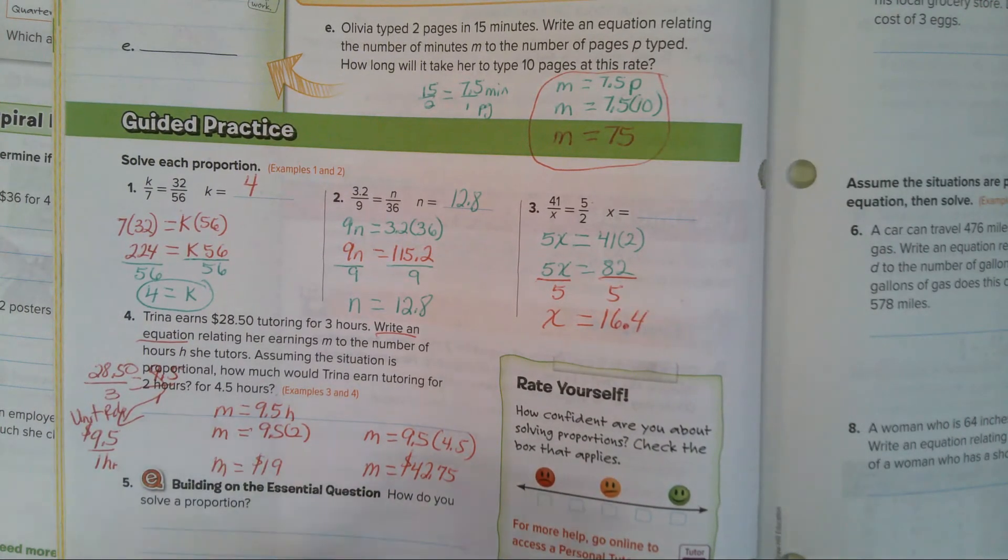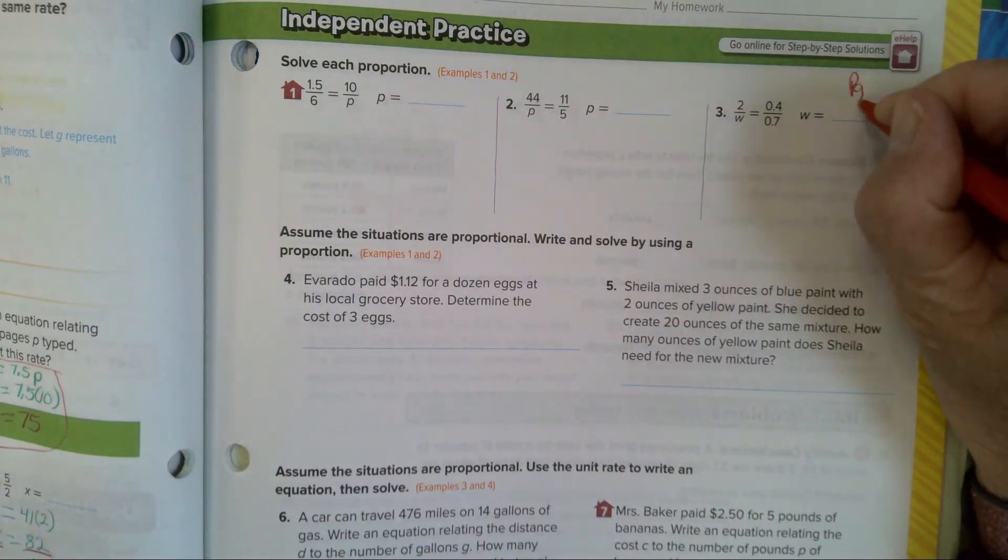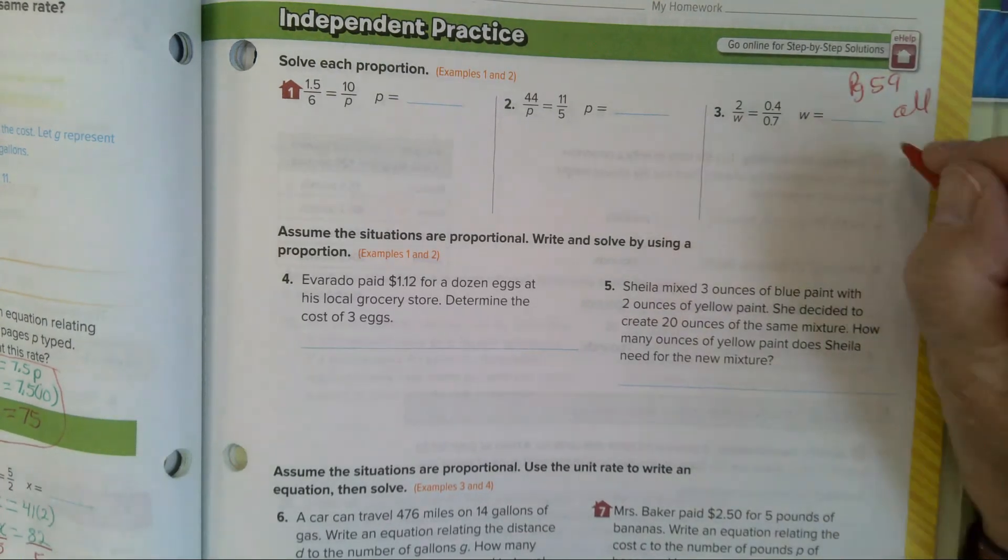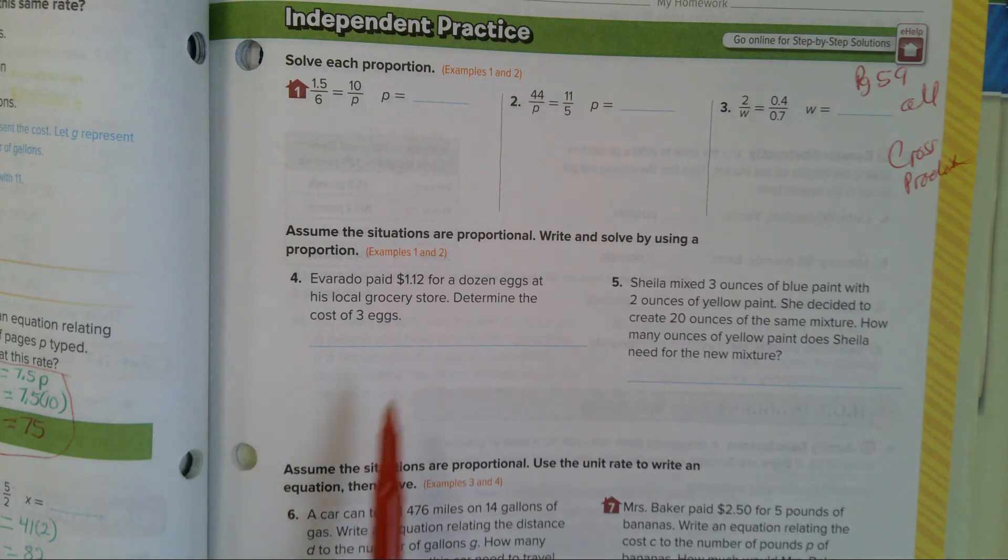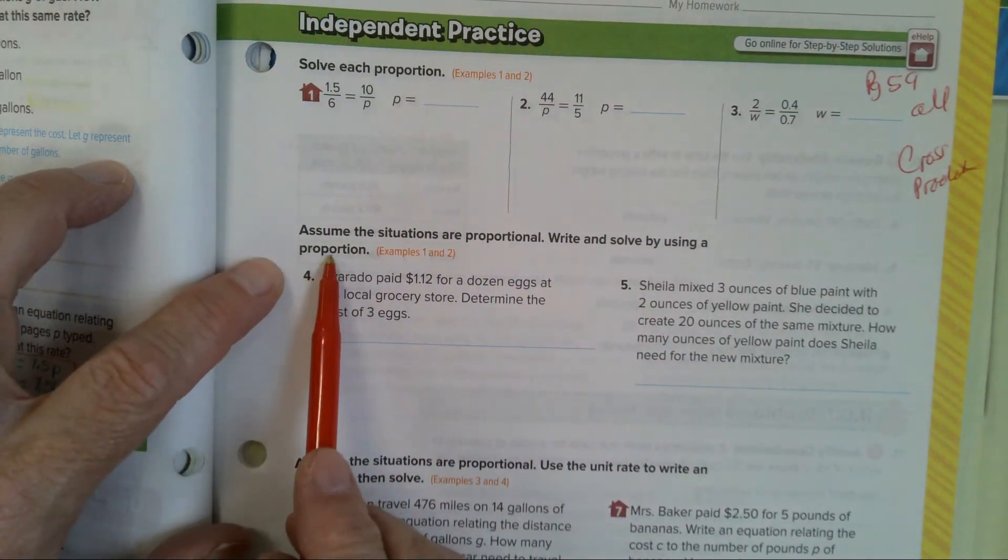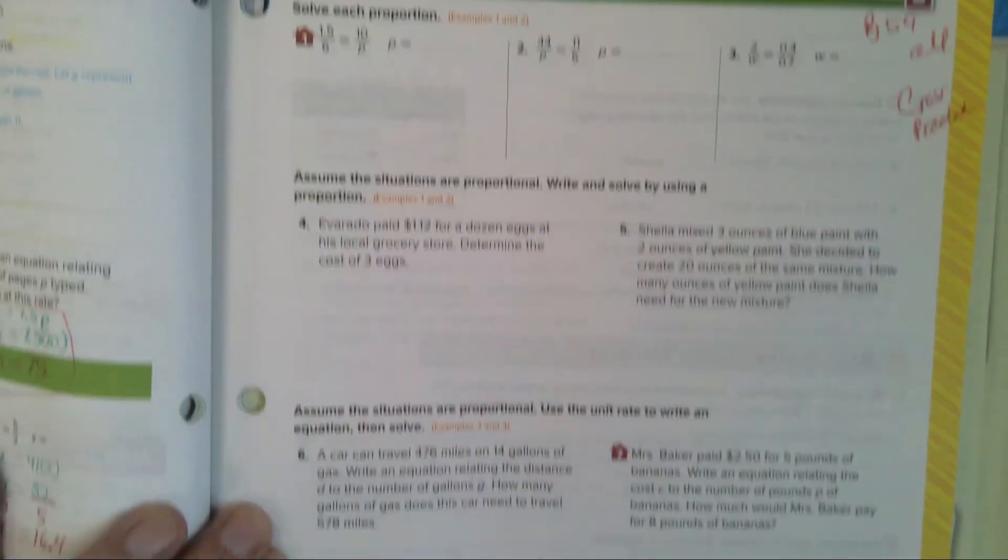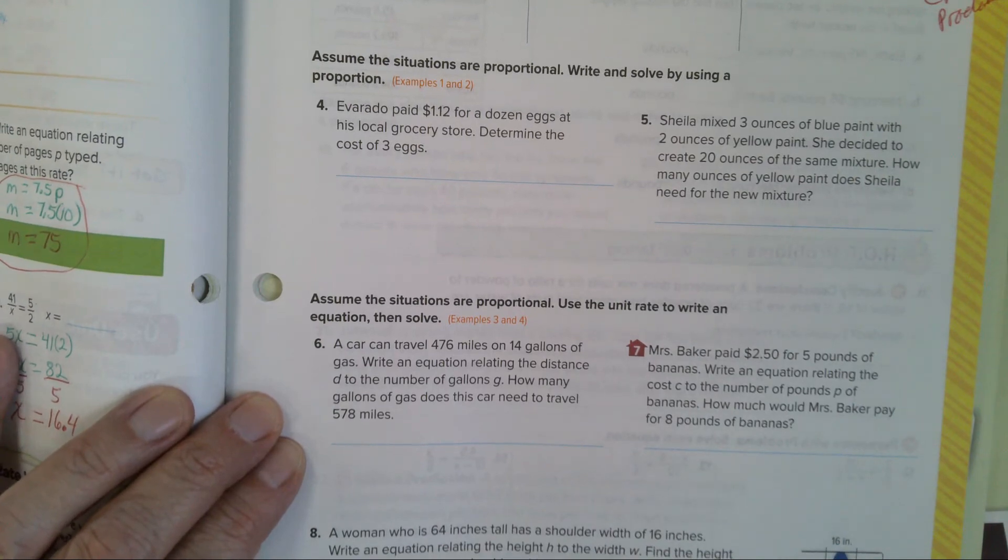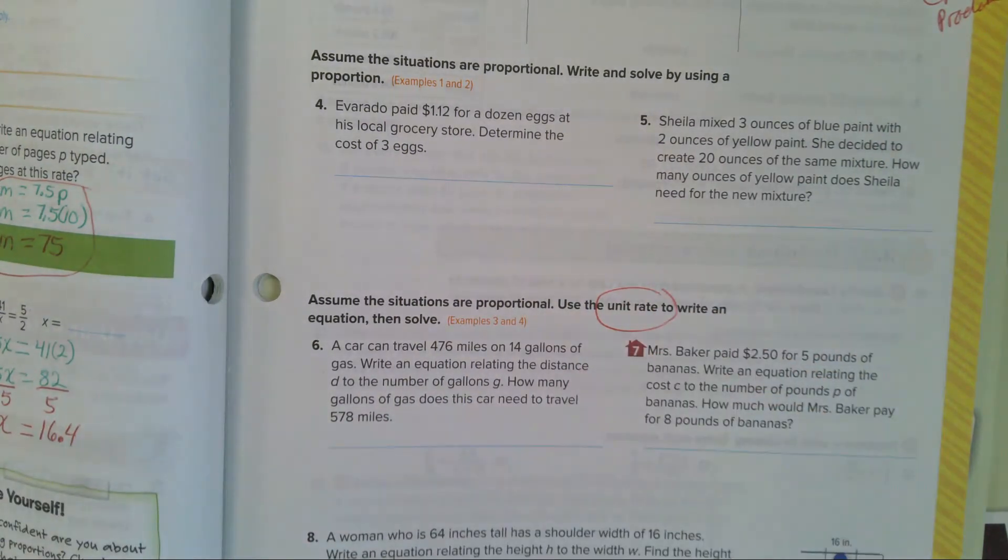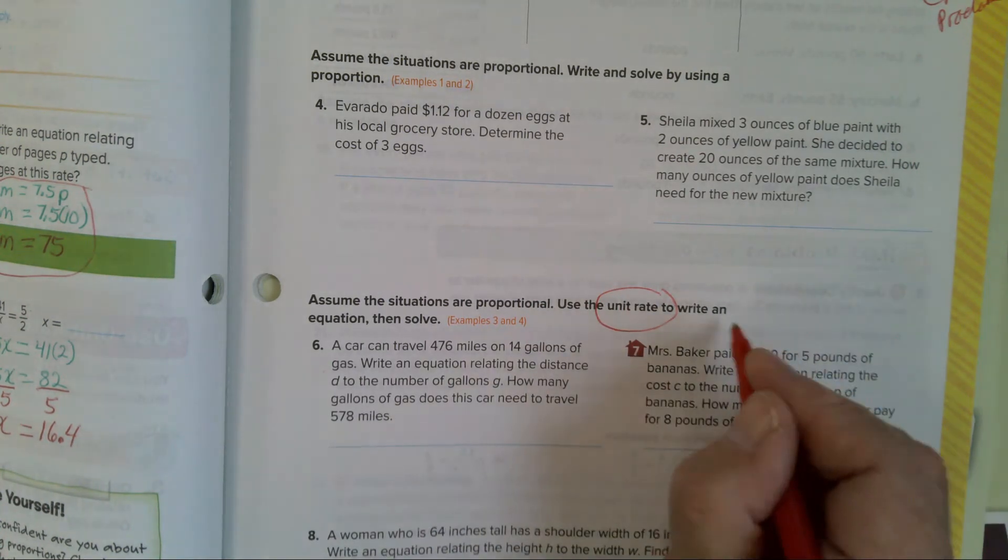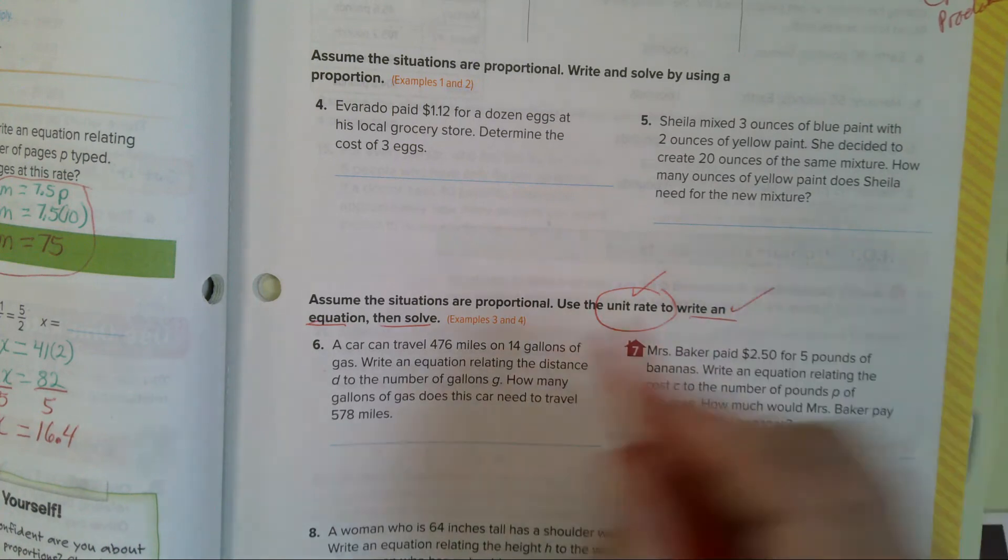So what do I want you to practice? Kids, I want you to show cross products on all of these problems. So on page 59 you're going to do all. And yes, you are going to show cross products. Even if it's really easy, I want you to practice cross products. In 4 and 5, it says write and solve by using a proportion. A proportion is going to be cross products. For 4 and 5. In 6, 7, and 8, it says assume the situations are proportional. Use the unit rate to write an equation. So on 6 and 7 and 8, you have to find the unit rate, just like we did in problem number 4 and in example 4. And then you do an equation. And then you solve. So these have three parts. You find the unit rate, write an equation, and then you solve it.